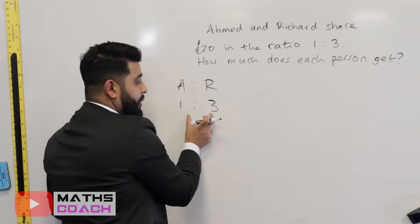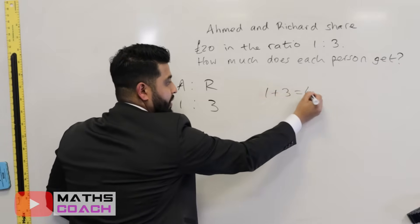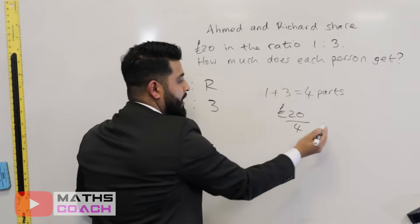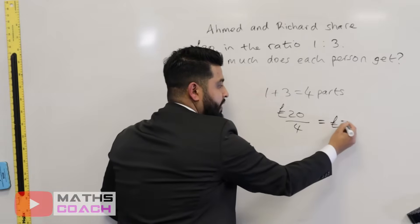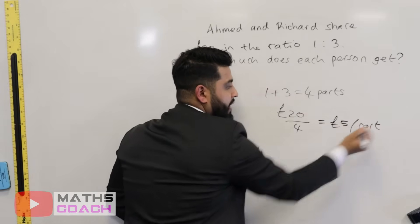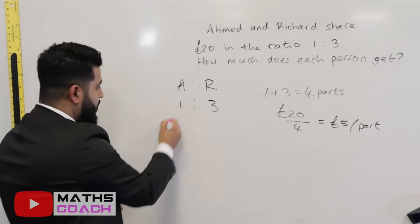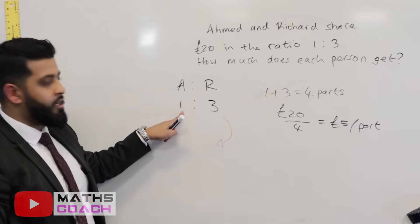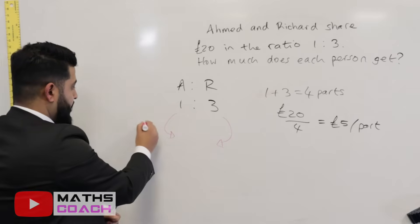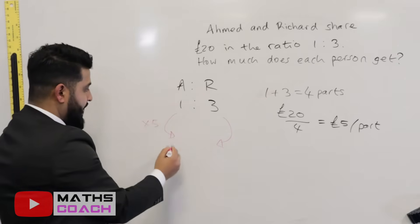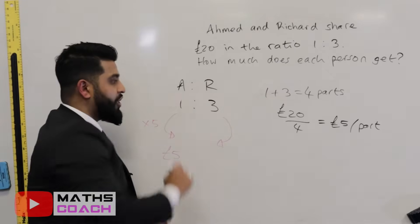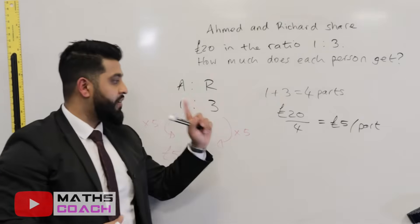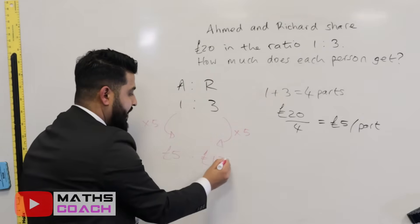We want to know how many parts to divide our amount into. We have 20 pounds and we add up the parts: one plus three equals four parts. So each part is worth 20 divided by 4, which is five pounds. Ahmed needs one part: five times one equals five pounds. Richard needs three parts: five times three equals fifteen pounds.